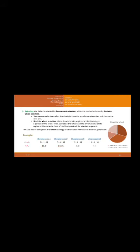For selection, the father is selected by tournament selection while the mother is chosen by roulette wheel selection. Tournament selection picks k individuals from the population at random and chooses the best one. For roulette wheel selection, we divide the circle into PS parts; each individual gets a portion of the circle, then we rotate the wheel and the chromosome in front of the fixed point is selected as parent. We also use elitism strategies to save the e best individuals to the next generation.